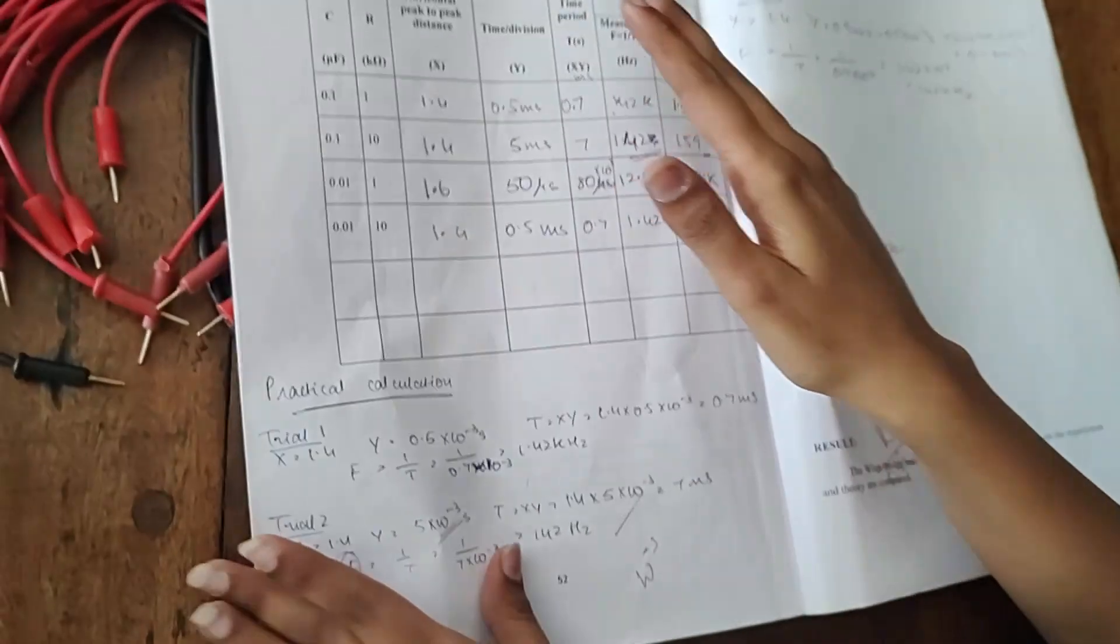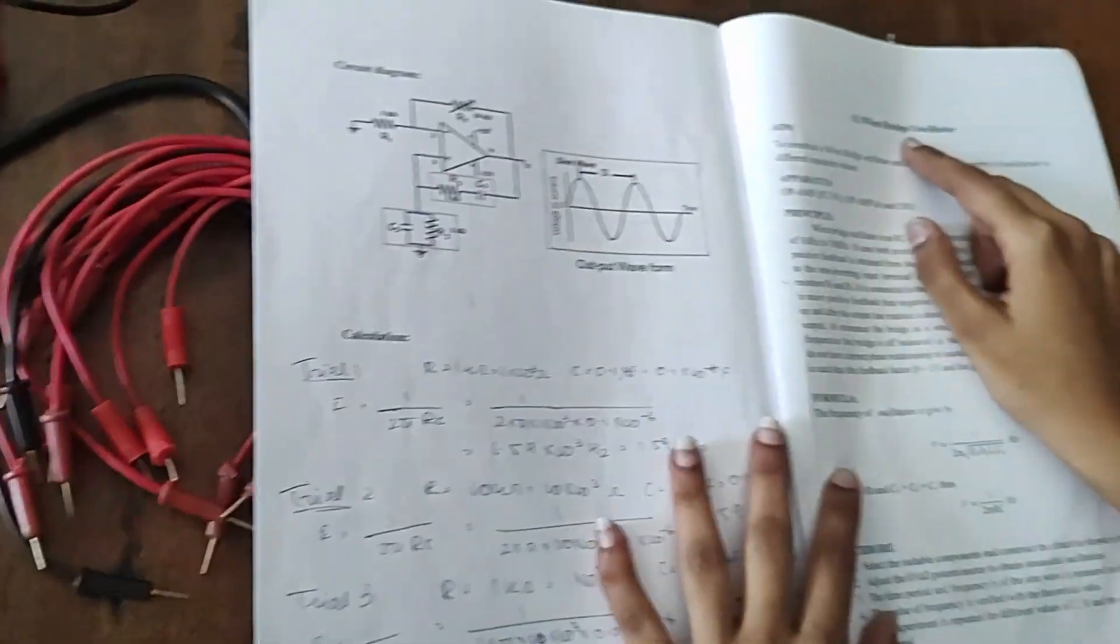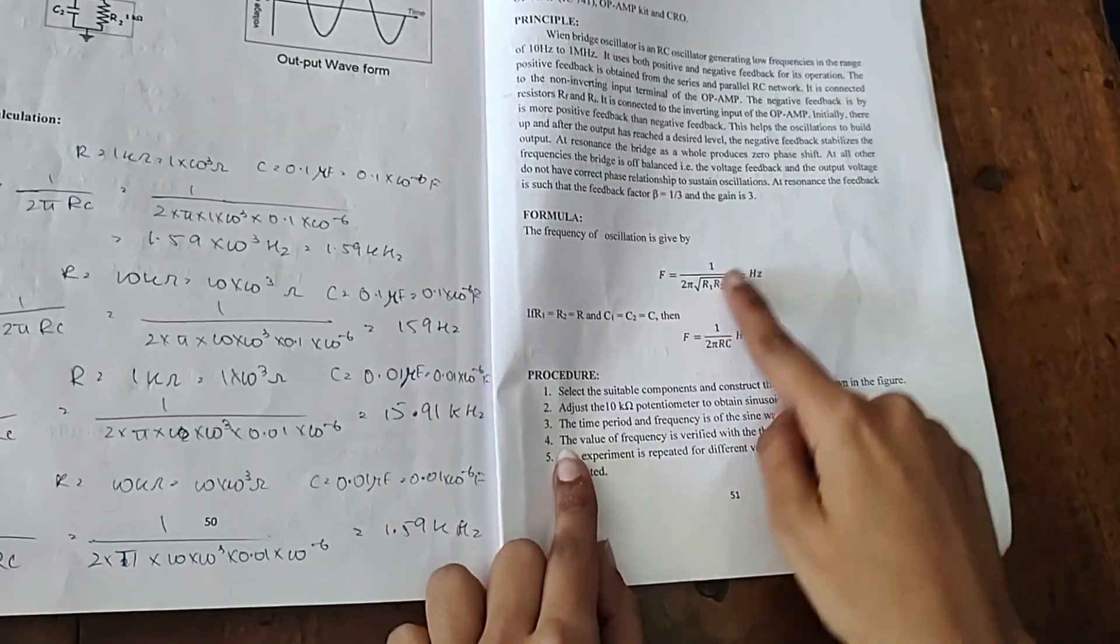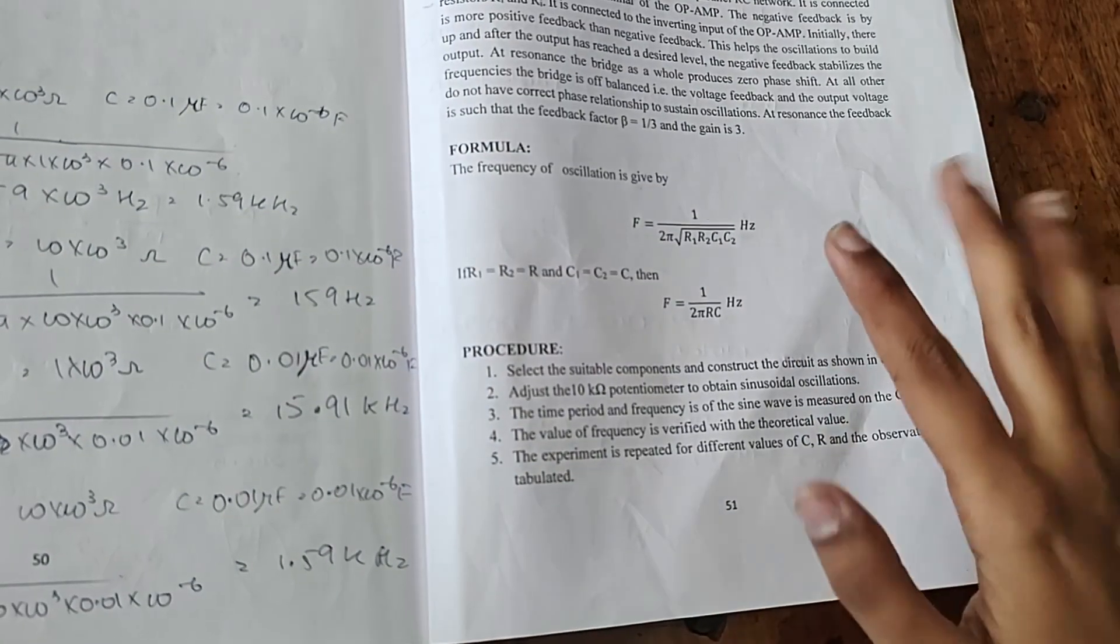Today we're going to do Wainbridge oscillators. When you get Wainbridge oscillator, the first thing you need to know is the formula: f is equal to 1 by 2π√(r1·r2·c1·c2).